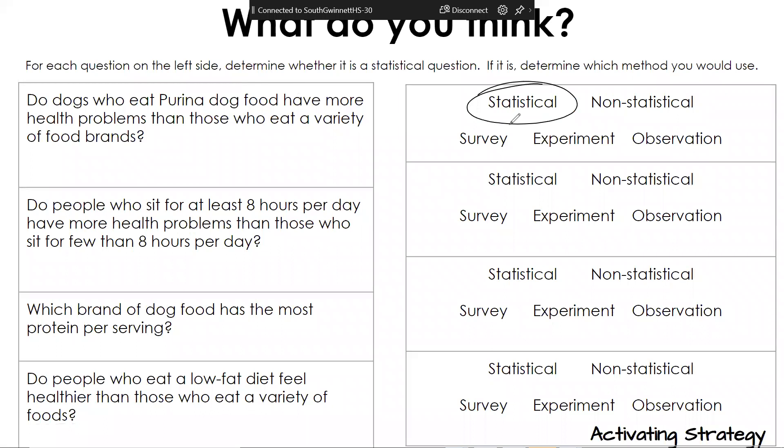Why do you say that? Looking at this, there's a comparison between dog food brands, and depending on how you write this, you could change it from a survey to experiment to observation. Would we want to make a dog eat a specific brand of food if they're going to have health problems? Probably not. So this one could be an observation, but you could write it as an experiment.